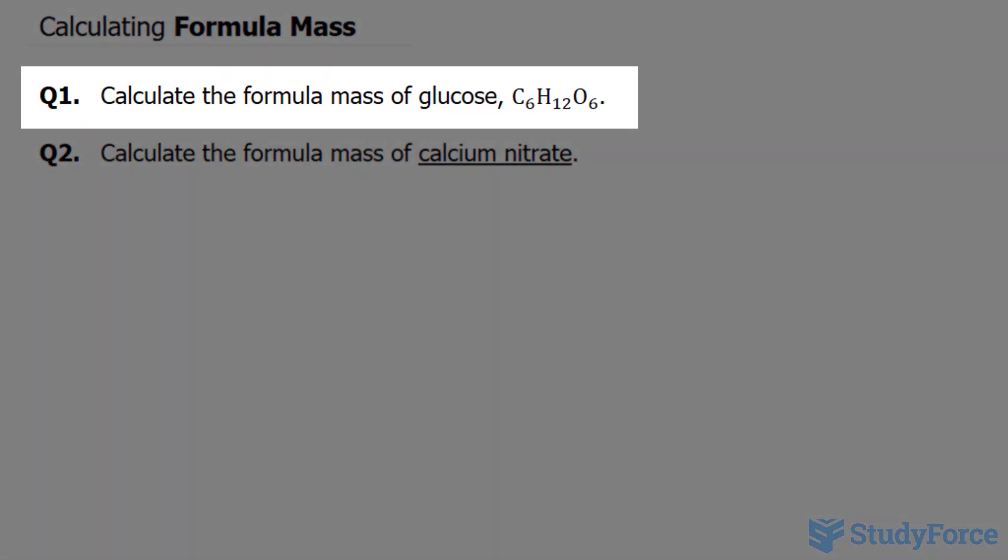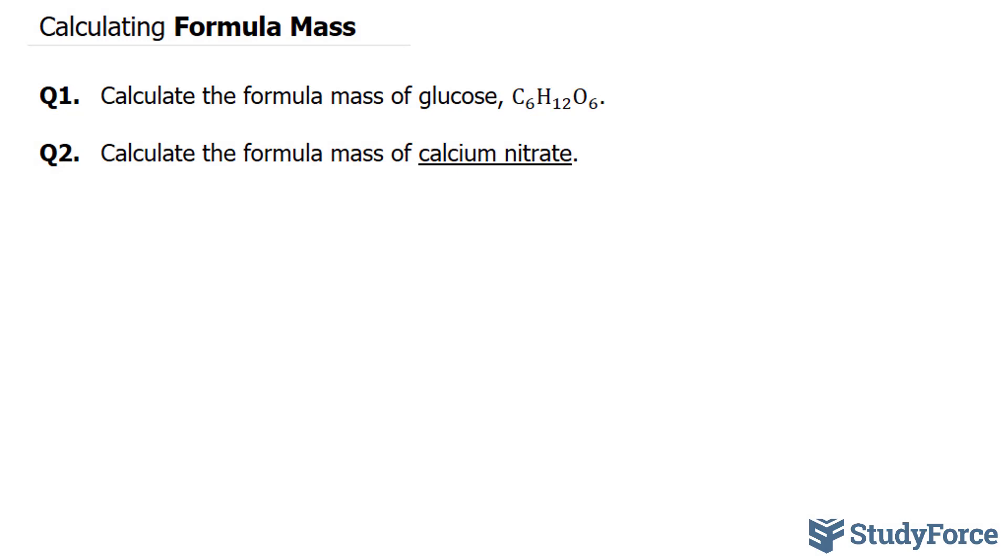They want us to calculate the formula mass of glucose, which has the chemical formula C6H12O6. What we have to do is multiply each of these subscripts by the molar mass of that particular atom. For instance, the molar mass of carbon is 12.1, and that can be found on the periodic table.